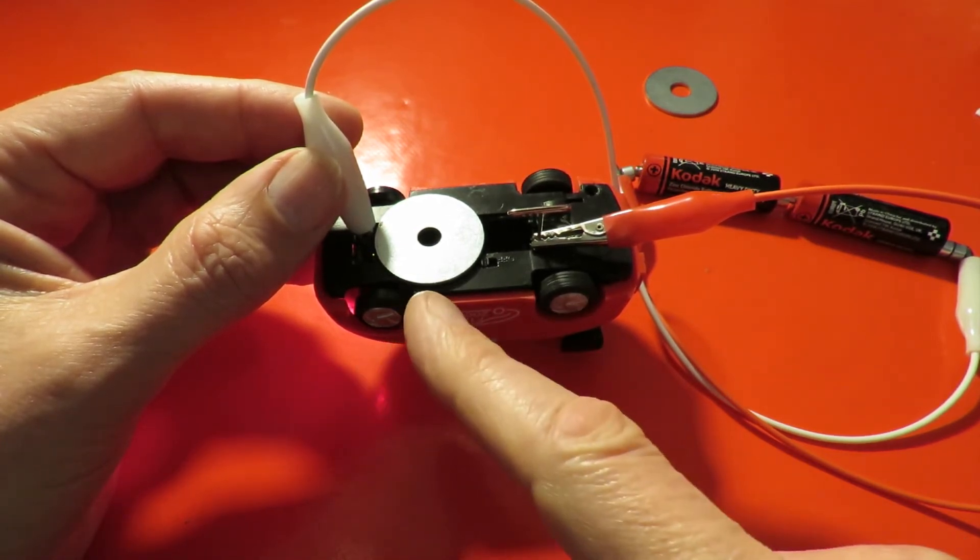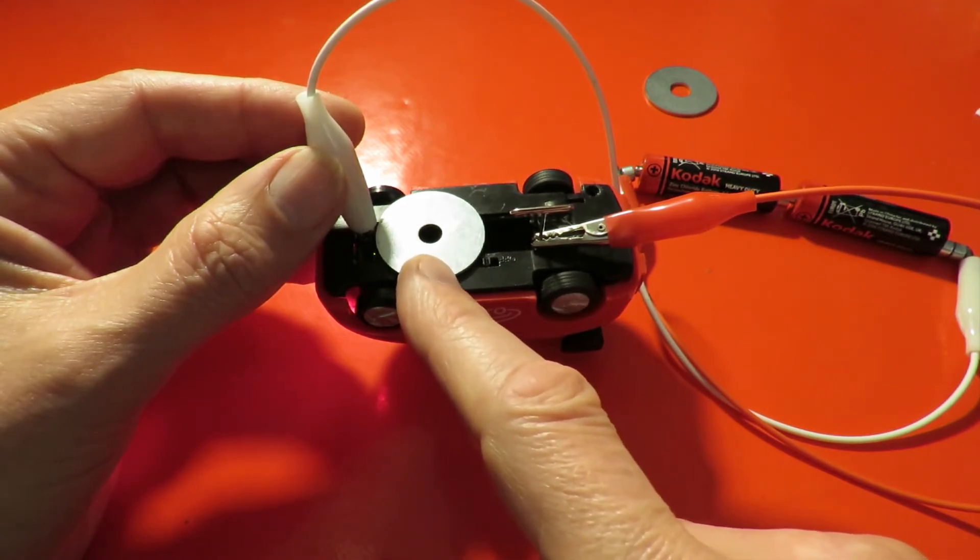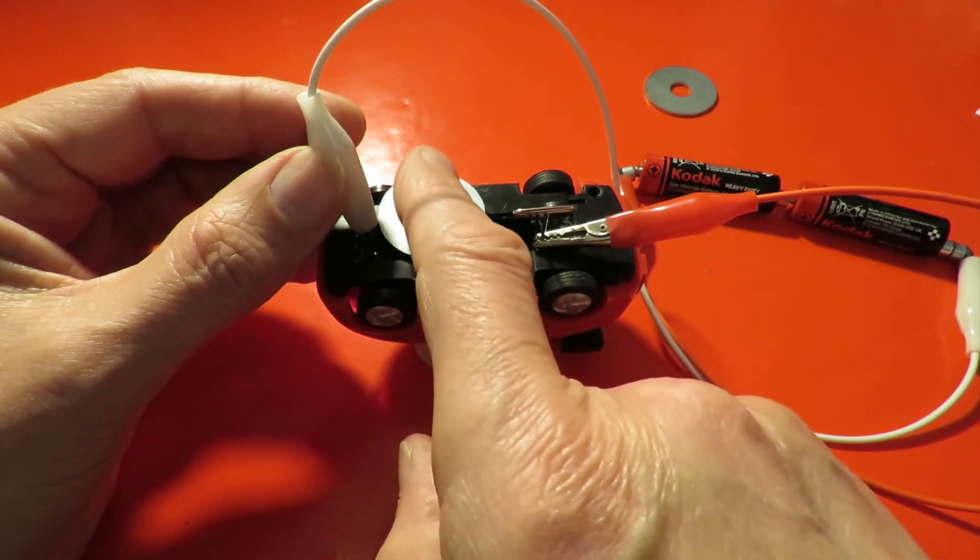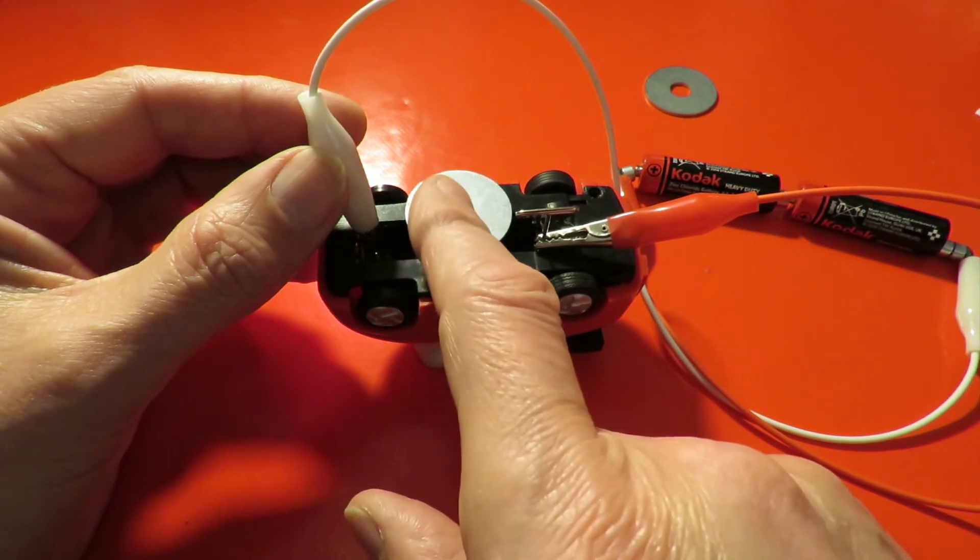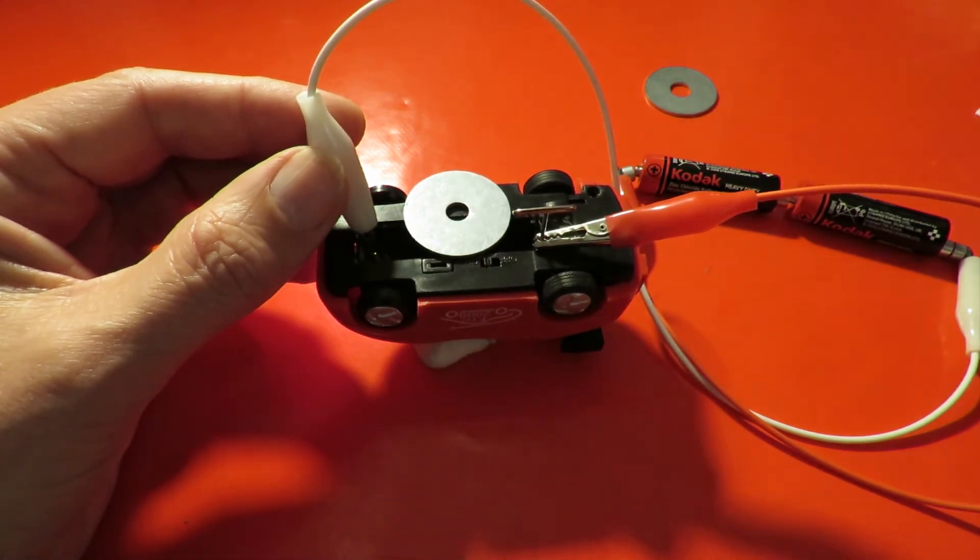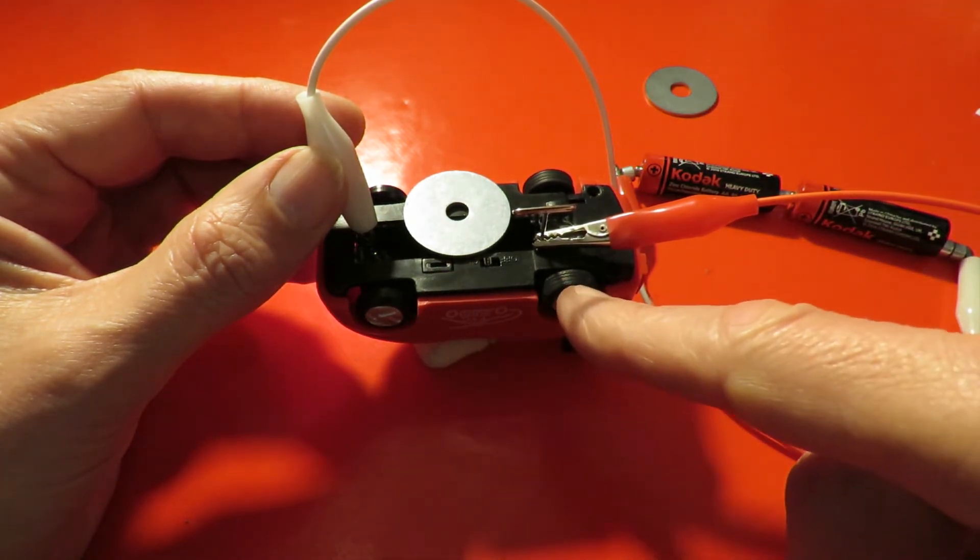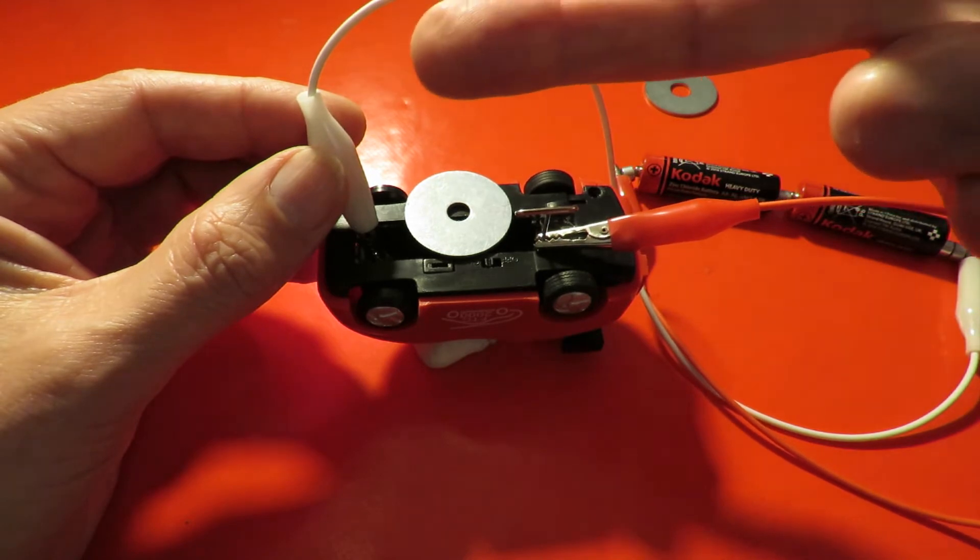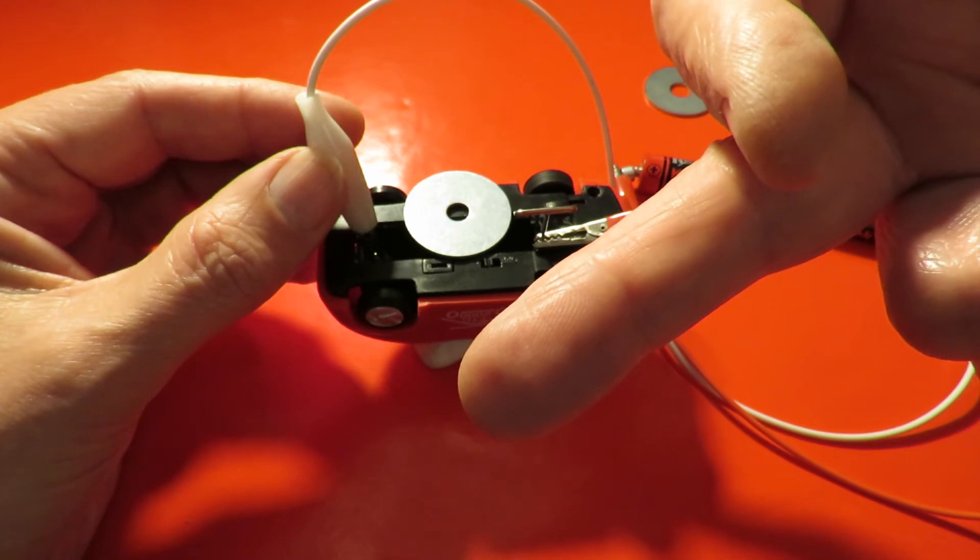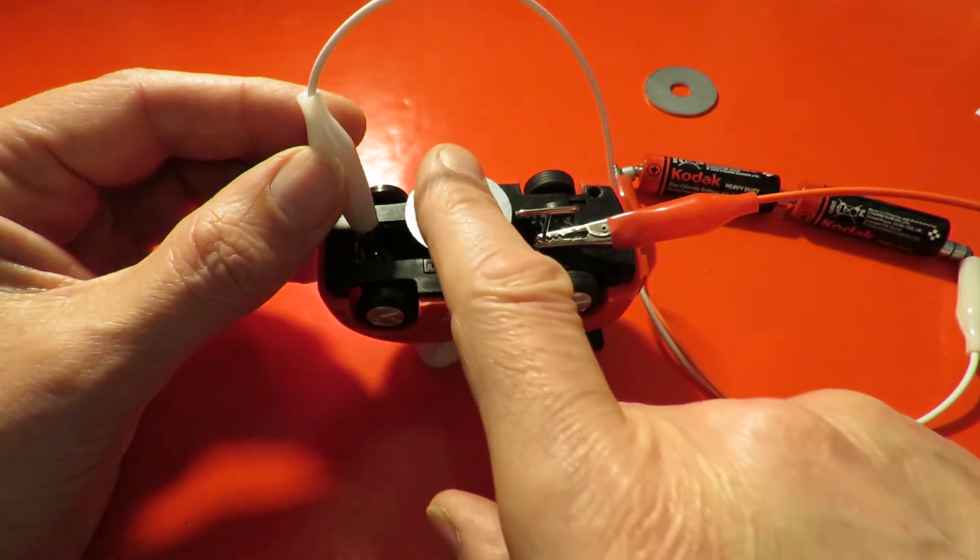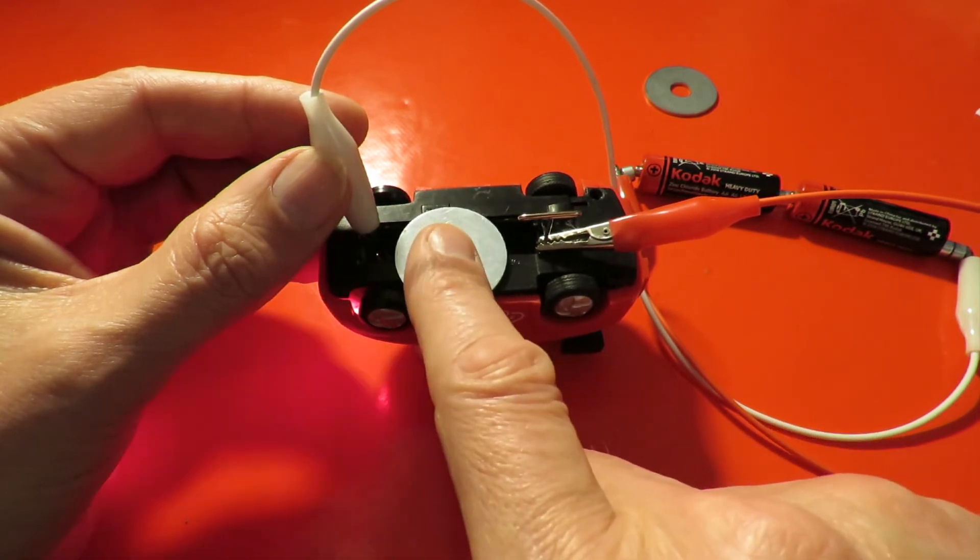So if the car drifts one way and instead of seeing a shiny surface it sees a black surface, then this one turns off. The other one's supposed to keep going. There we go. So what that does is if the black line's on this side, this wheel stops turning. That one keeps turning. So that'll push the car this direction, so over the black line back onto the white. Same the other way.